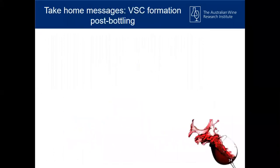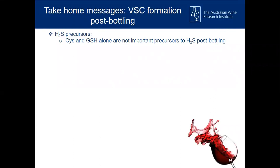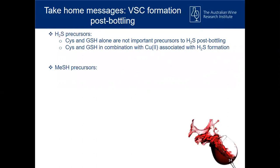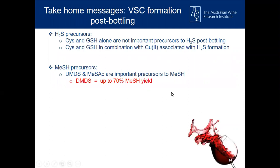Our take-home messages for volatile sulfur compound formation from precursors: cysteine and glutathione alone do not pose a very big risk for H2S formation post-bottling. It's only when they're in combination with copper that we really start to develop risks for formation. Luckily, that is something easily managed by not adding copper, or adding it earlier. Both disulfides and thioacetates are important precursors to methanethiol. When we looked at the stoichiometric balance between moles of DMDS added and moles of methanethiol produced, we saw up to a 70% yield of methanethiol from DMDS over 12 months in the specific wines — especially in combination with copper.